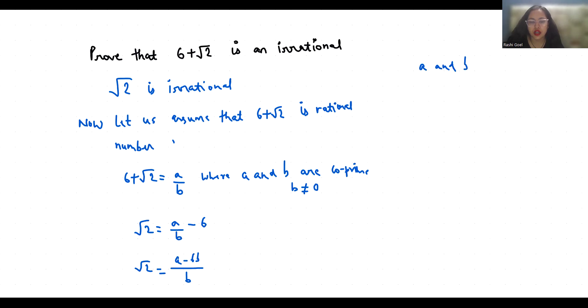Since they are coprime, a minus 6b by b, our right hand side, is rational.